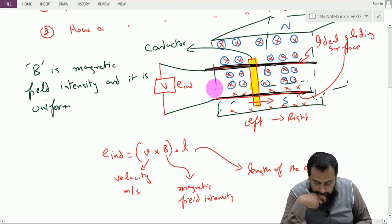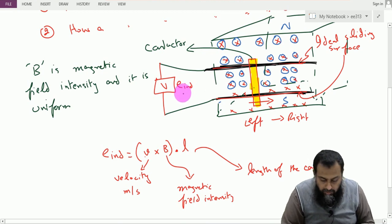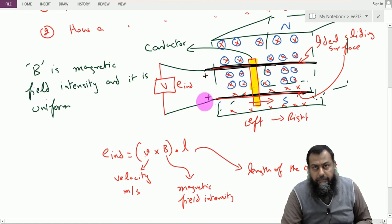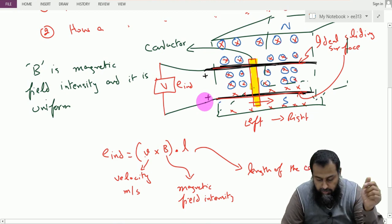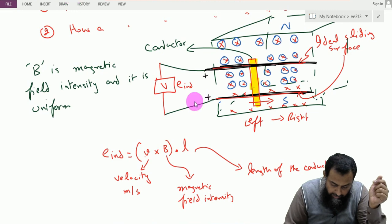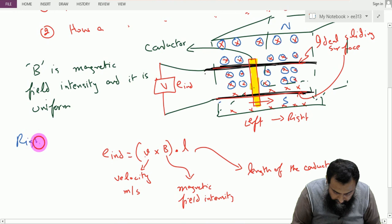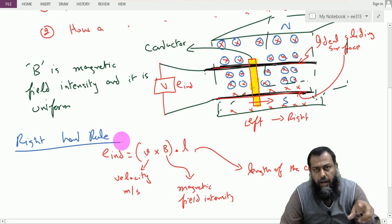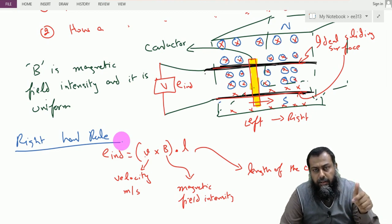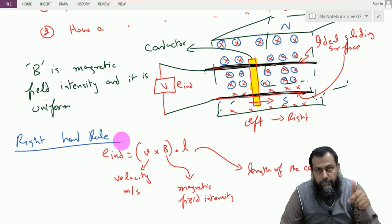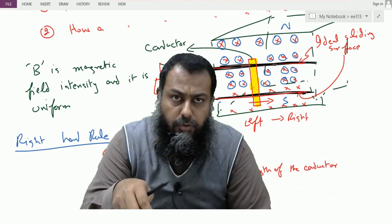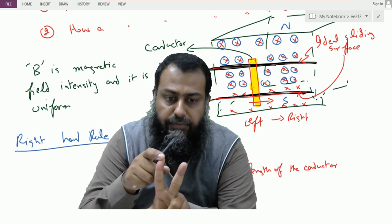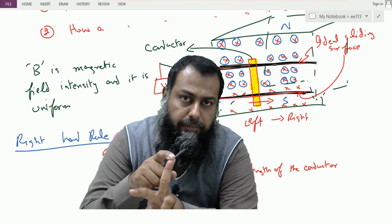We are also interested in knowing the polarity of this induced voltage — do we have a positive terminal here or somewhere else. The polarity of the induced EMF is important to understand. For that we have the right hand rule. There are two laws: the right hand rule and the left hand rule. We will see both of them in determining the direction of the induced EMF or the positive polarity terminal.